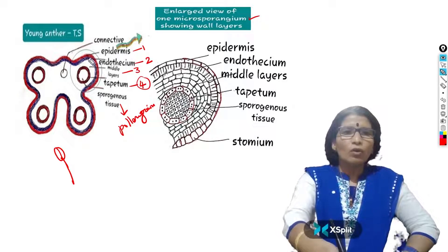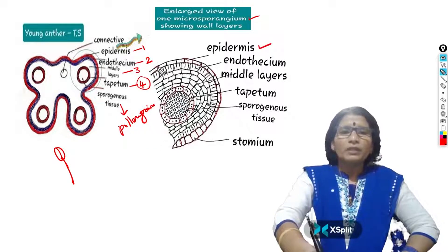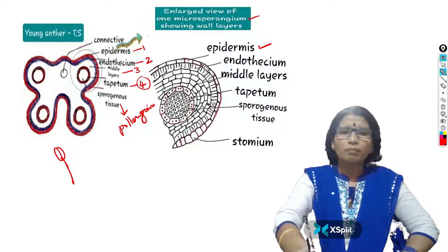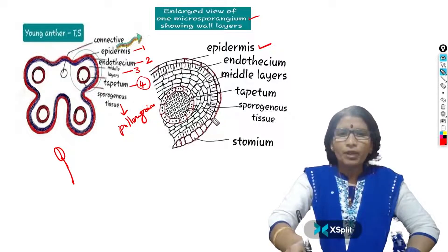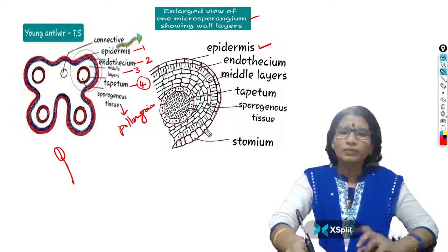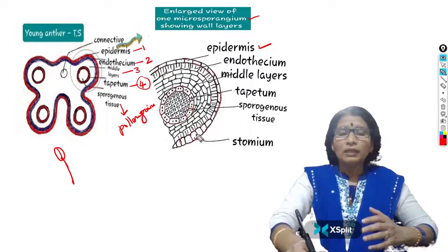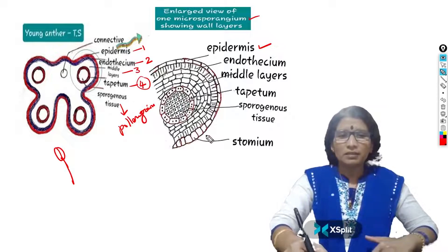Now, epidermis: it is a single wall layer, meaning cells are arranged side by side — one cell in thickness. All the cells are somewhat the same, but the epidermal cells are somewhat larger in size and made up of thin cell walls. At the same time, the stomium cells can easily lose water at the time of anther dehiscence.